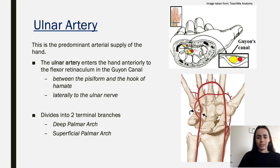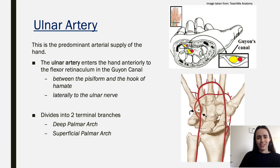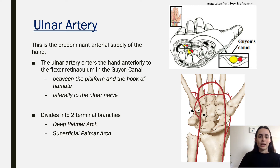In terms of the ulnar artery, this is the main arterial supply of the hand. The ulnar artery comes down following the ulnar bone and enters the hand anteriorly through the flexor retinaculum at the Guyon's canal. It goes between the pisiform and the hook of the hamate — this is the pisiform and this is the hook of the hamate. It is lateral to the ulnar nerve, which comes along the outside.